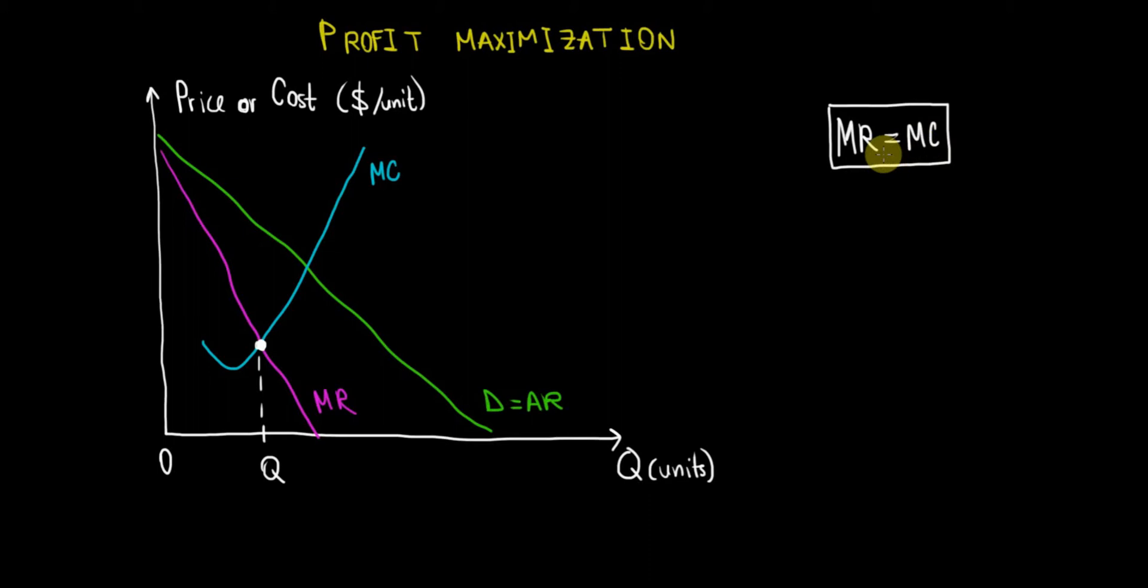What does this mean? It means that at the very last unit of sale where we maximize our profit, the revenue that we get from selling that last unit must be equal to the cost of producing that last unit. Why is this the case? Imagine the following. I will try to reason this with an example.